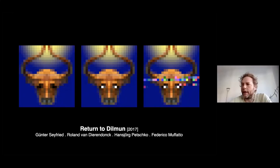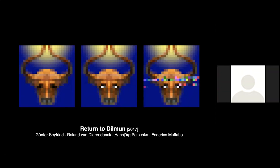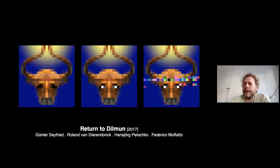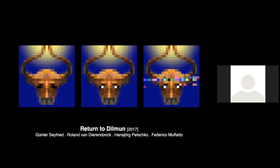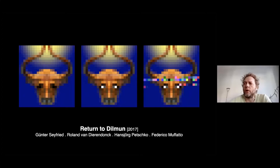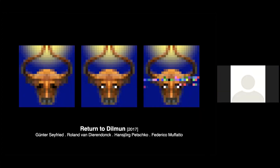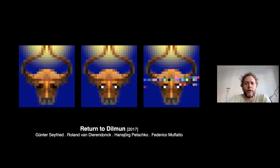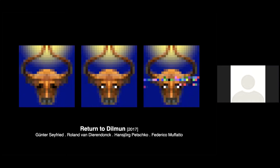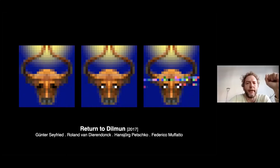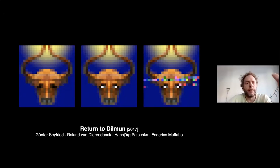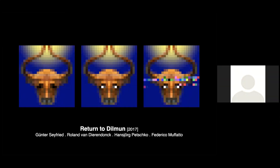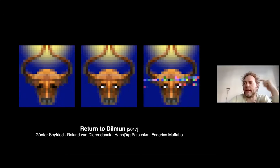In 'Return to Dilmun,' the image was translated into a synthetic DNA using our method, so the picture is stored as a biochemical molecule. This allows retouching of the image on a molecular level using CRISPR-Cas9. You can see three images: the bull's head without eyes, the target result, and the actual result after inserting the eyes using CRISPR-Cas9.